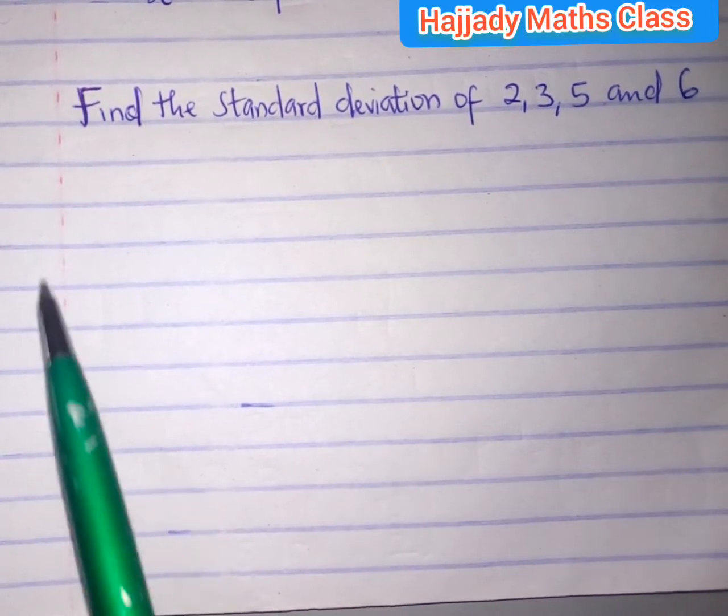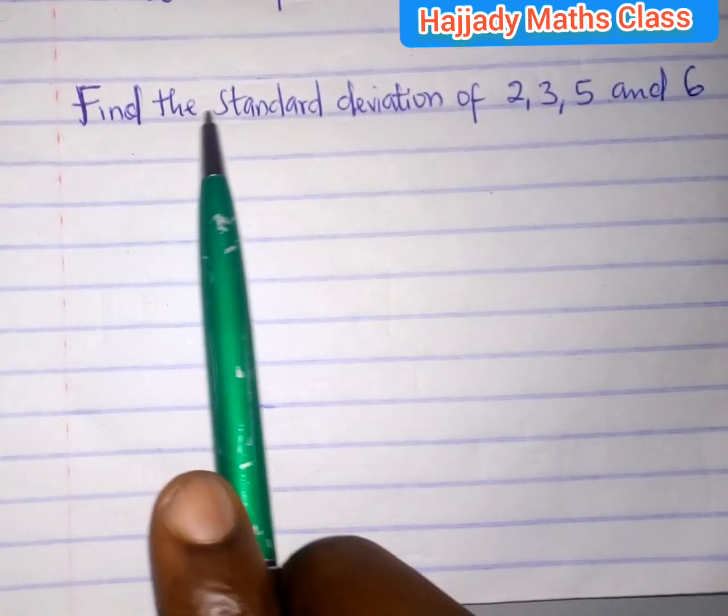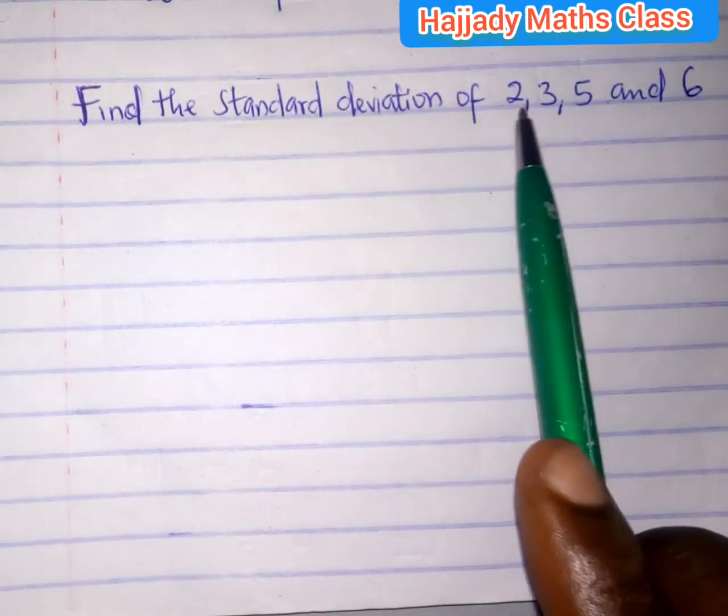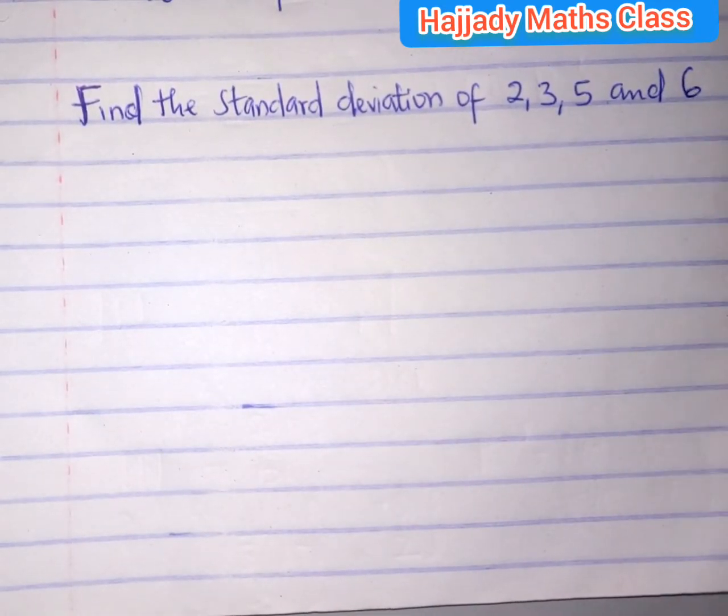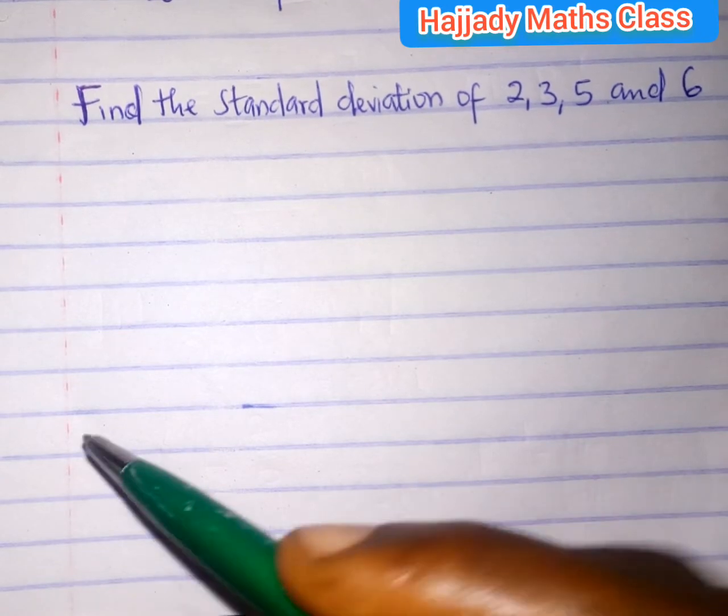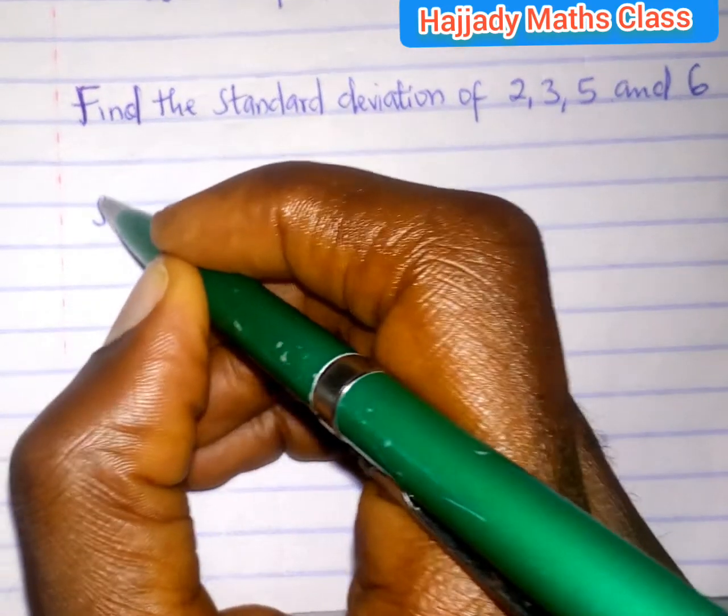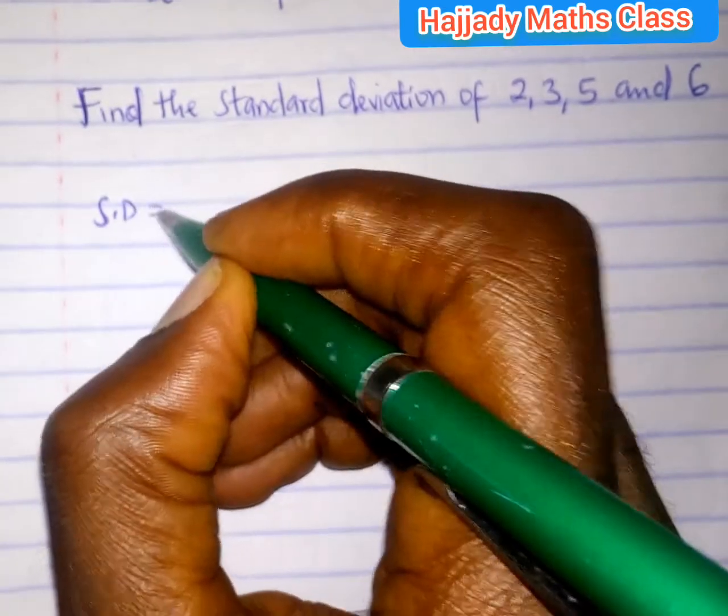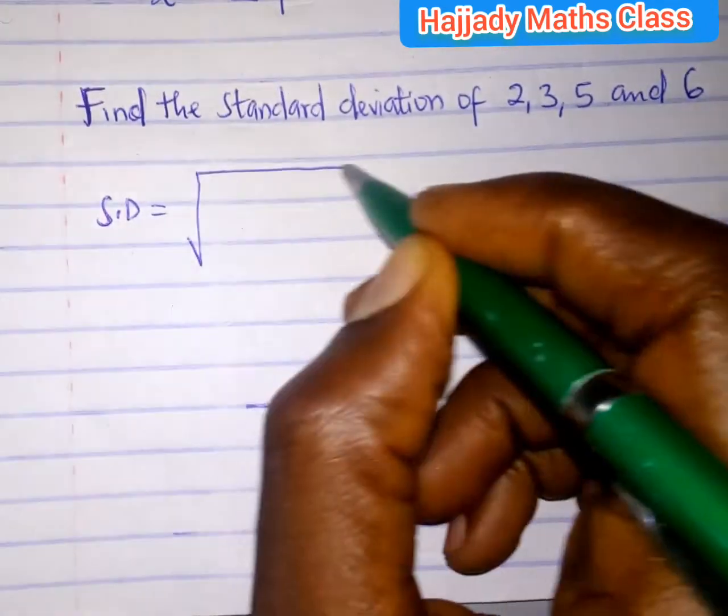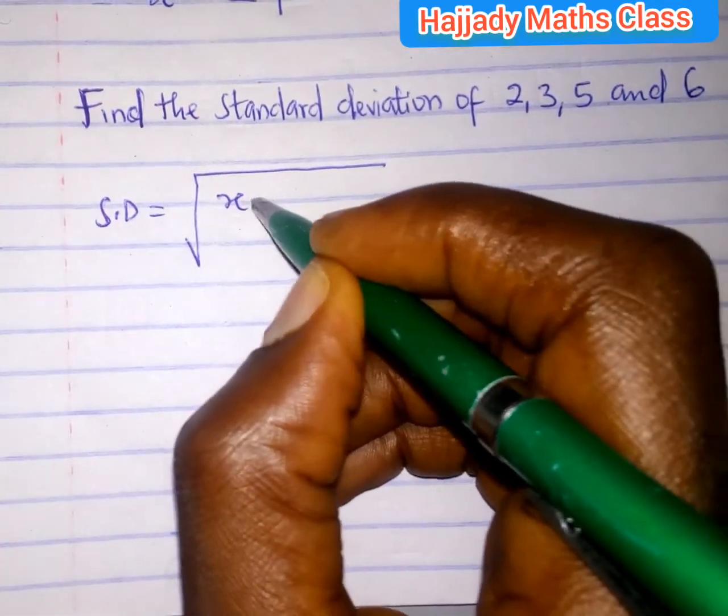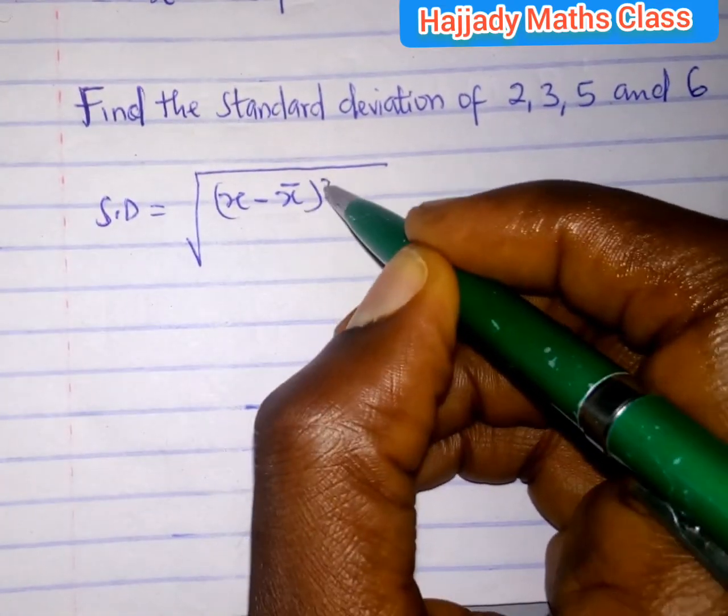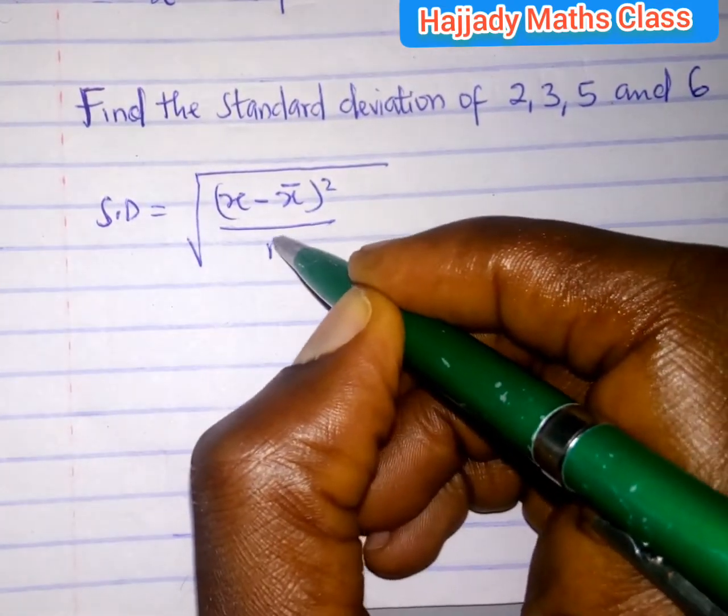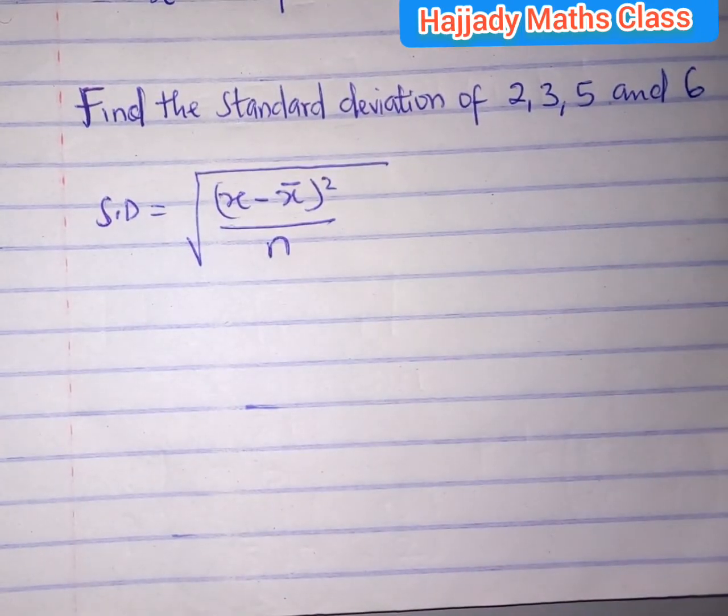Today, the question says find the standard deviation of 2, 3, 5, and 6. For us to do this, we need to know the formula for calculating standard deviation. The formula is square root of (x minus x bar) all squared over n. That is the formula for calculating standard deviation.